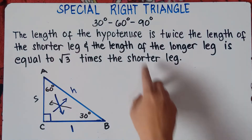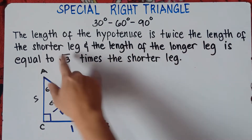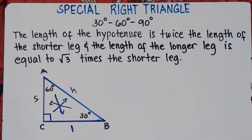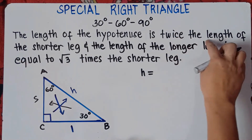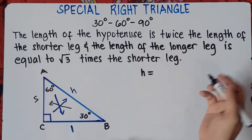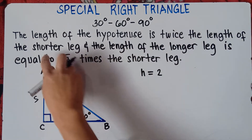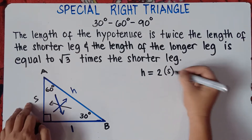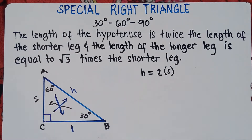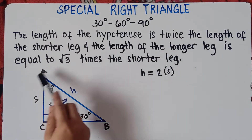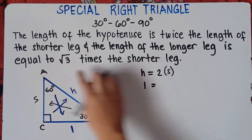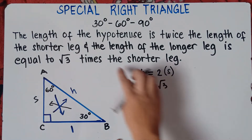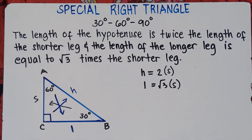Now according to the theorem, the hypotenuse is twice the length of the shorter leg. So the formula is: hypotenuse equals two times the shorter leg, or H = 2S. And the longer leg is equal to square root of 3 times the shorter leg, so L = √3 · S. That's the formula.